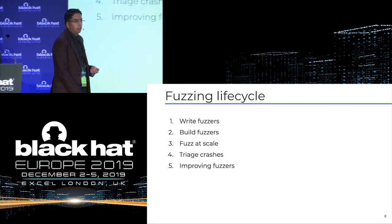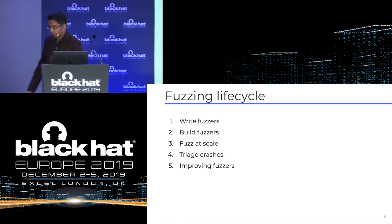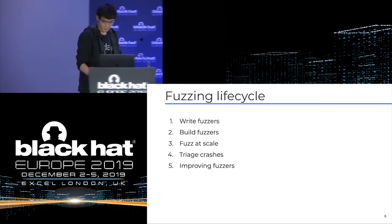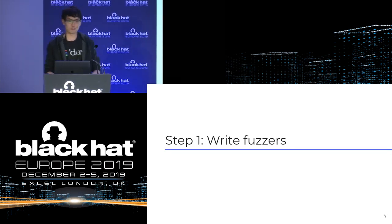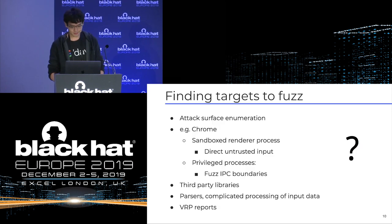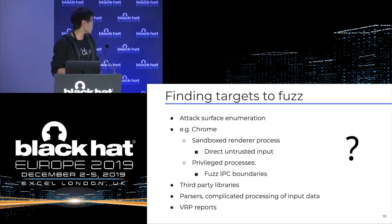Let's go over the fuzzing lifecycle in more detail. With that, I hand over to my colleague Oliver. Obviously, the first step of starting fuzzing at all is to write fuzzers. Before we write any fuzzers, we have to figure out what we want to fuzz. This should start with attack surface enumeration — looking for where untrusted input is consumed in our program. This is obviously specific to every application.